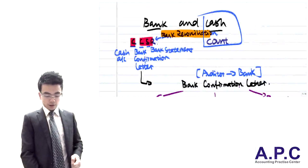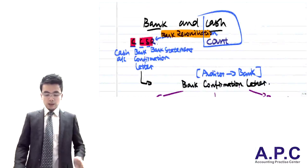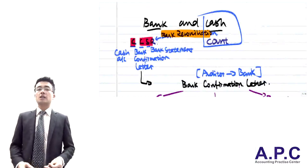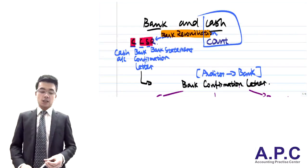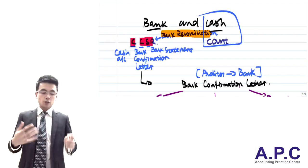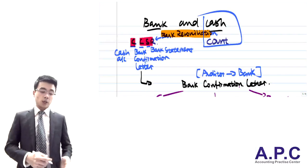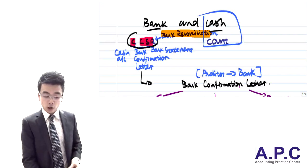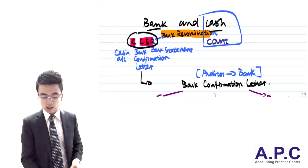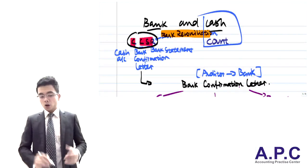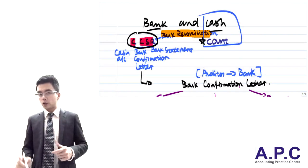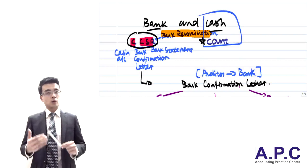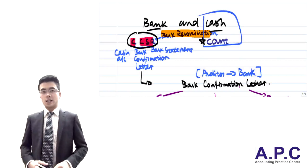That's the section on substantive testing for bank and cash. When auditing the bank, remember CCSR. When auditing cash on hand, count the cash to verify accuracy.